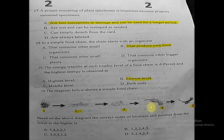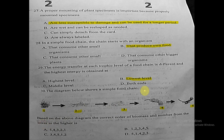Question thirty: the diagram shows a simple food chain with levels one through five. The correct order of biomass and number from lower to higher goes from the highest level — eagle — then snake, then frog, then insects, then plants or grass. The correct answer for question thirty is choice A.